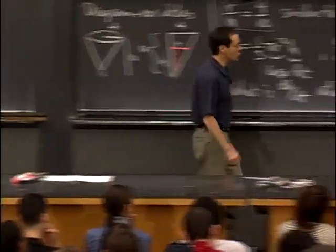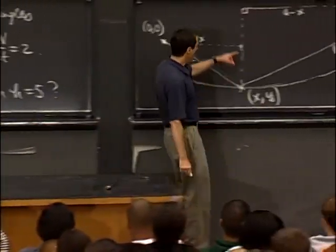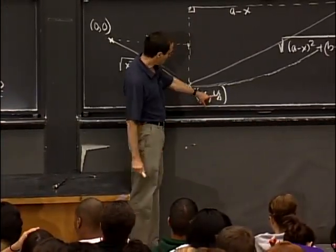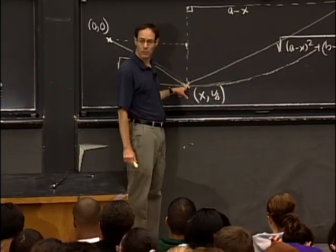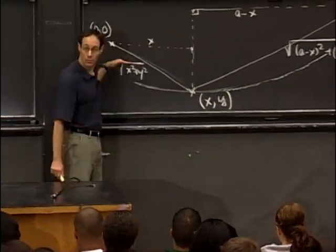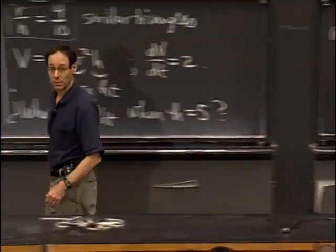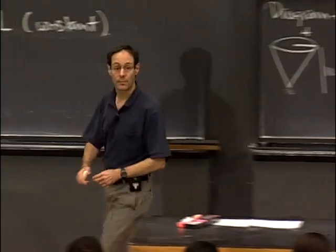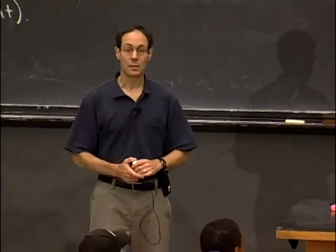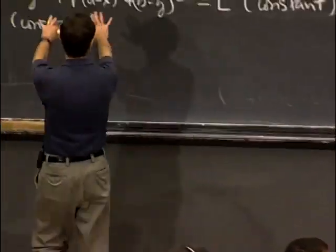So the question is, shouldn't it be b + y? No, and the reason is that y is a negative number. It's below 0. So it's actually the sum, b - y is a positive number. So here's the formula.